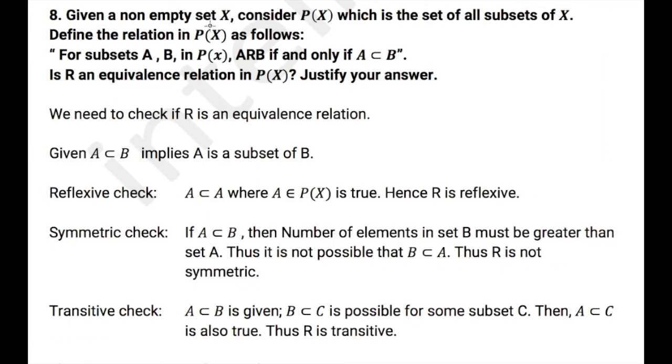Now, the next question. Given a non-empty set X, consider P(X) which is the set of all subsets of X. Define the relation in P(X) as follows. For subsets A and B in P(X), A related to B, if and only if A is the subset of B. We need to check if R is an equivalence relation. So P(X) has lot of subsets say A, B, C etcetera. So out of these subsets A is related to B only if A is the subset of B. If A is the subset of B, then A is smaller than B or A is equal to B.